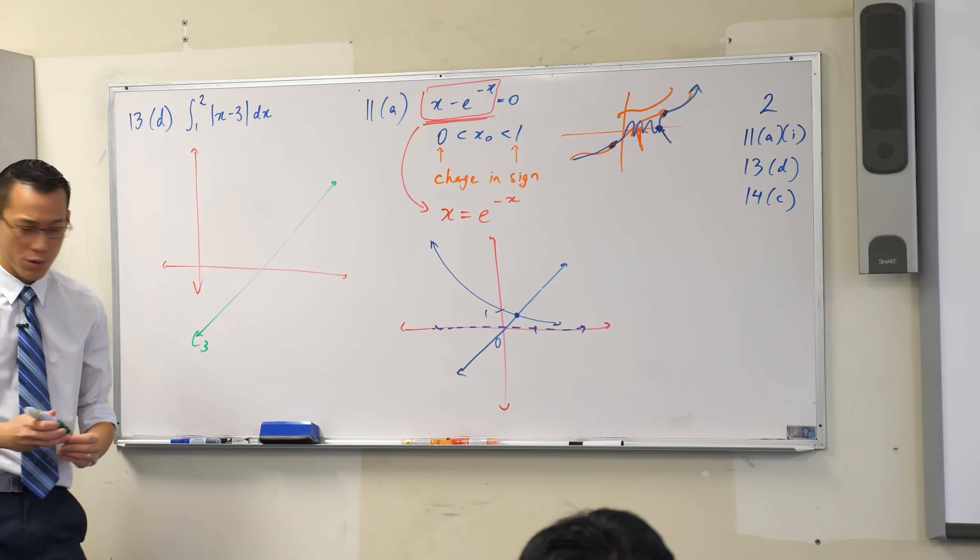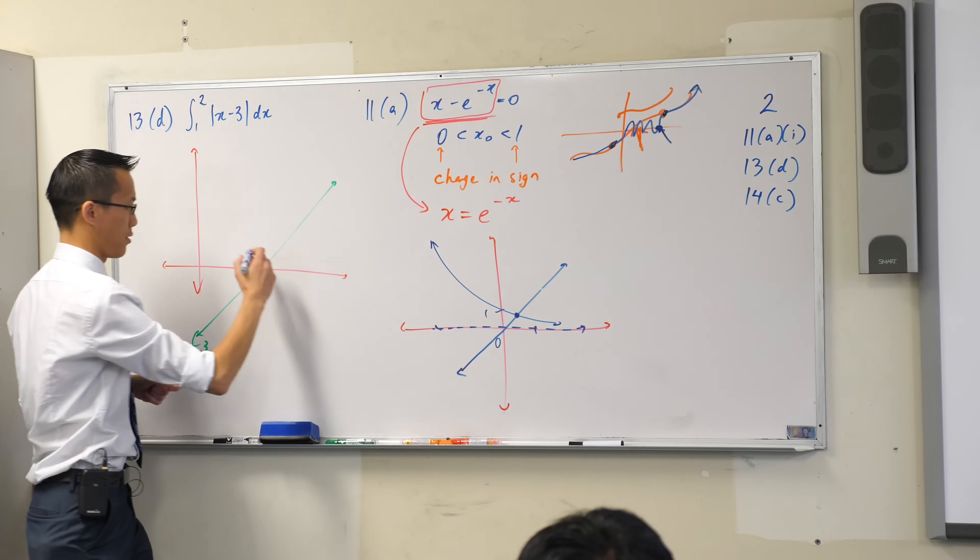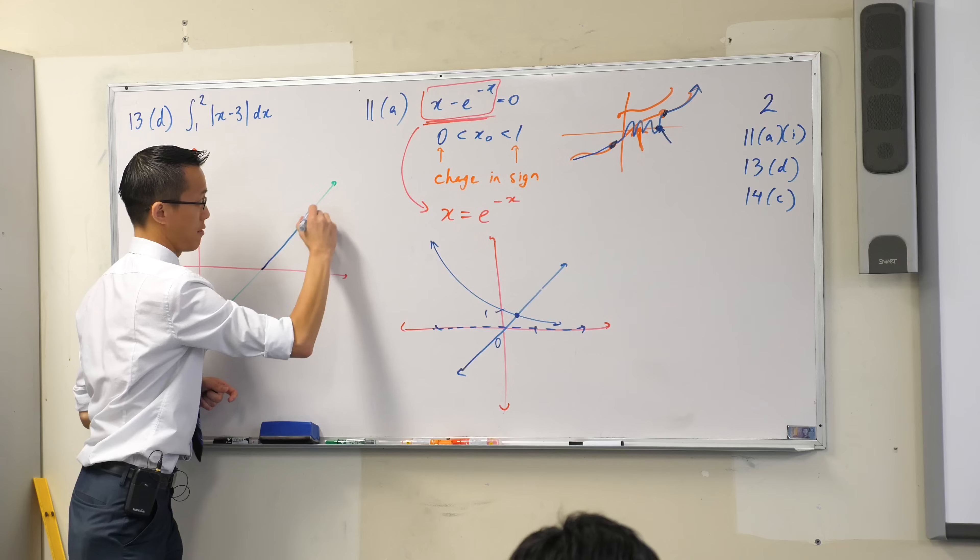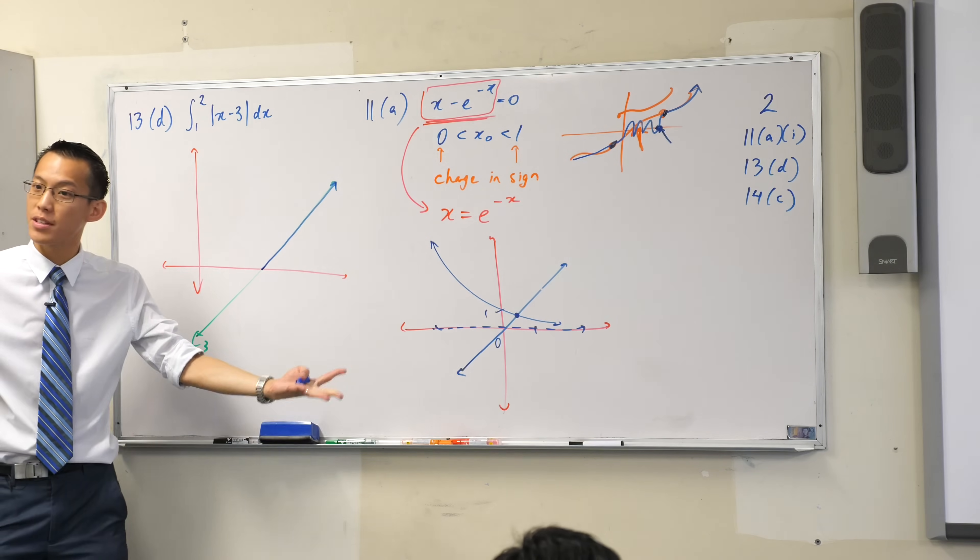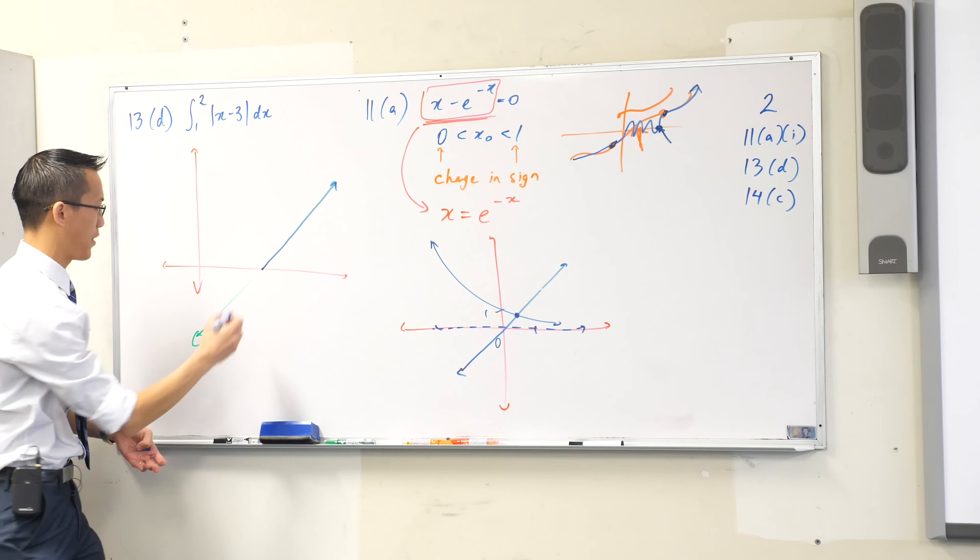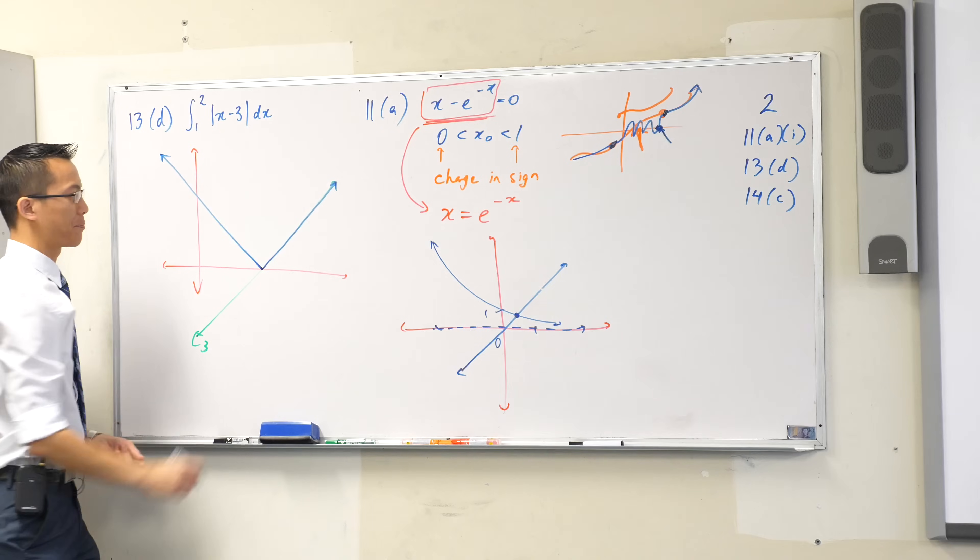To take the absolute value of that, this part's not going to change, so there's that part of the graph. And what happens to the rest of it? It flips up, right? It reflects, so I've got this kind of shape.